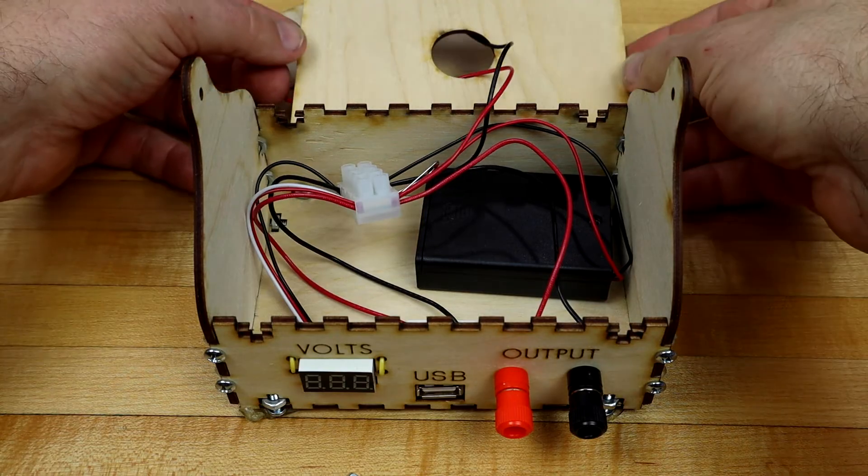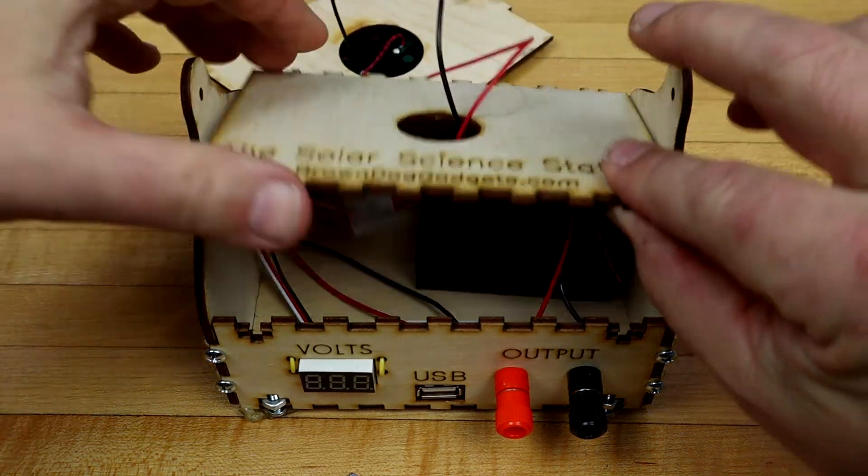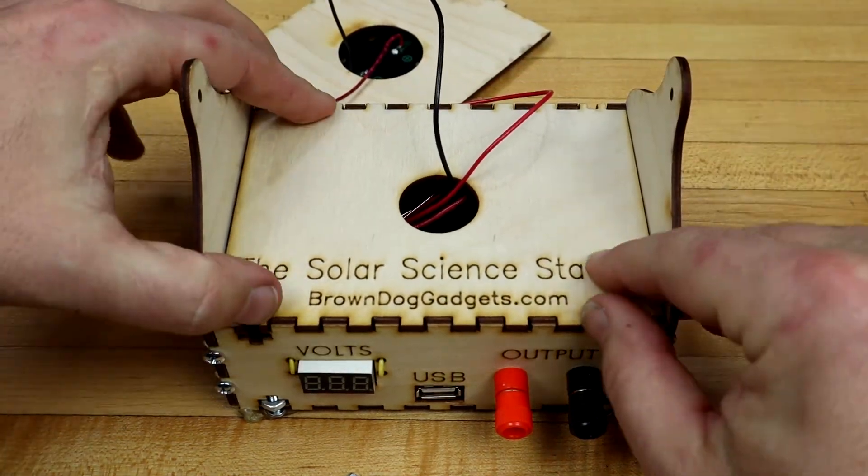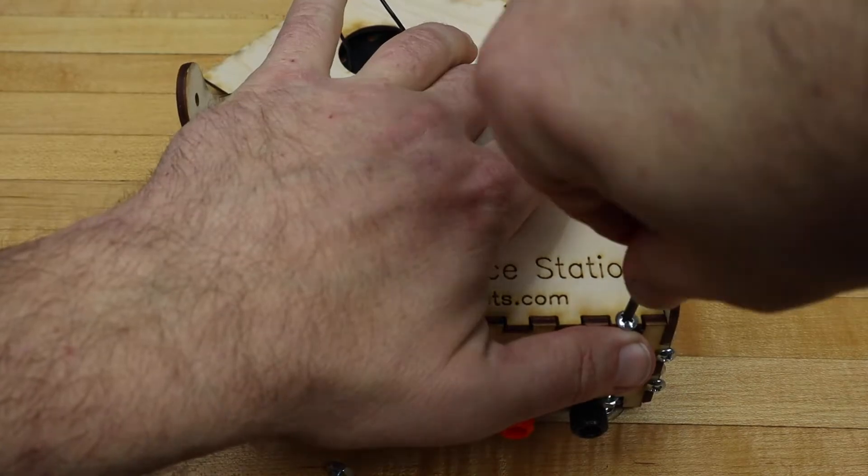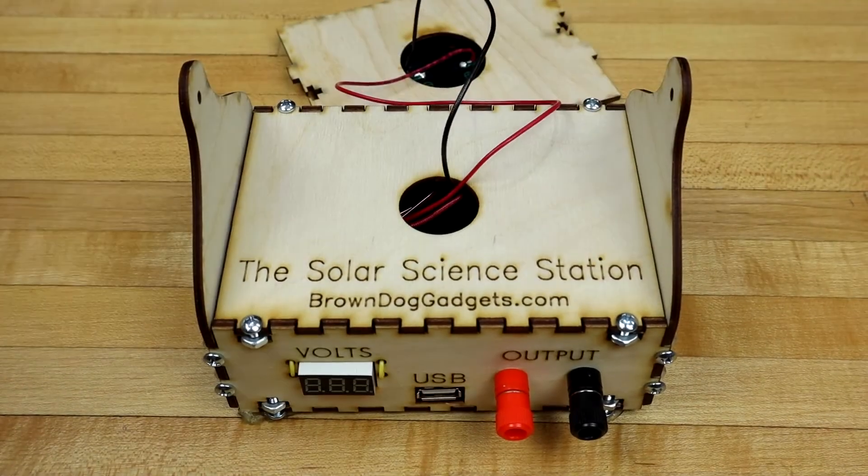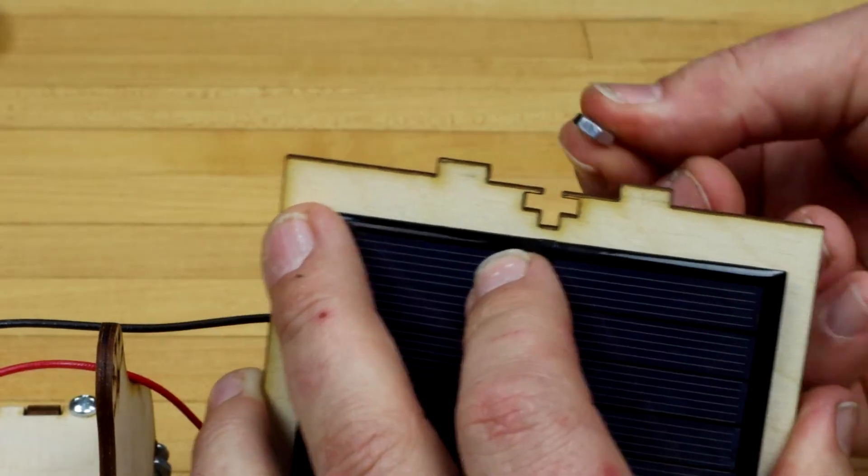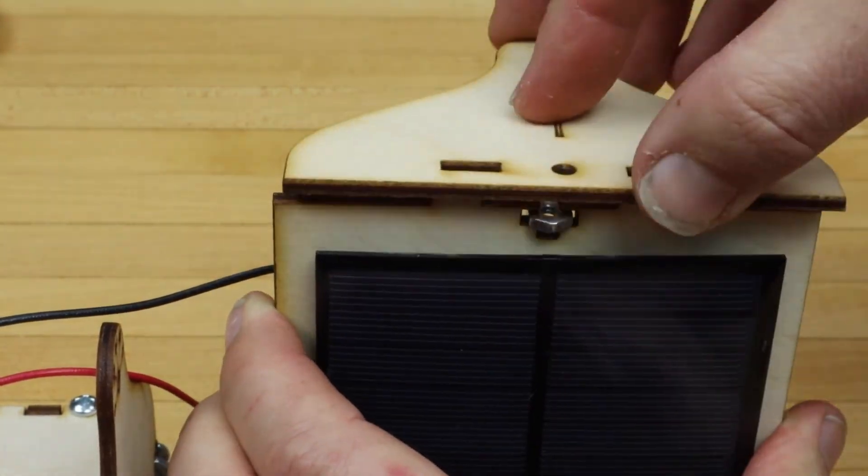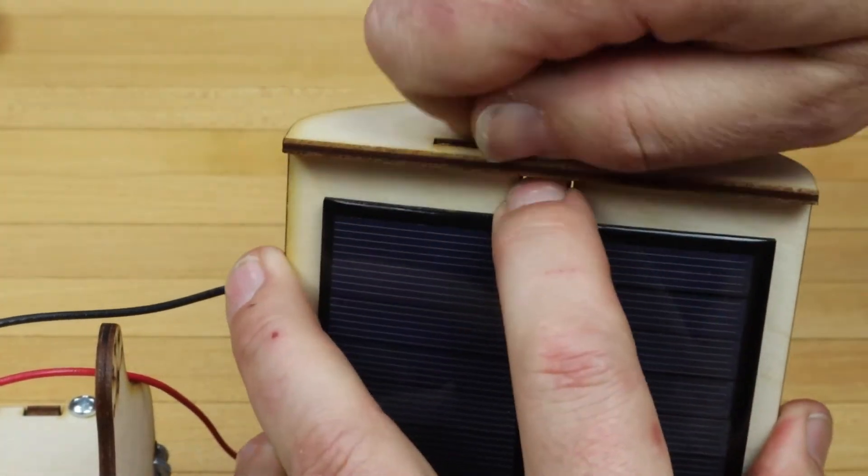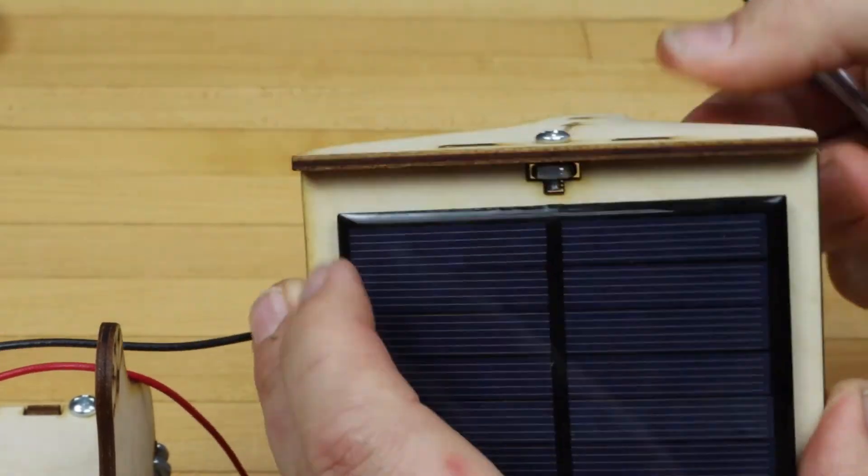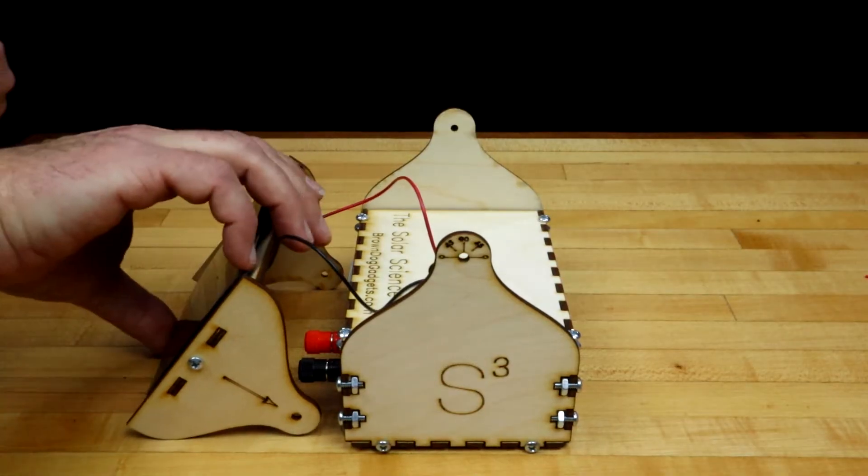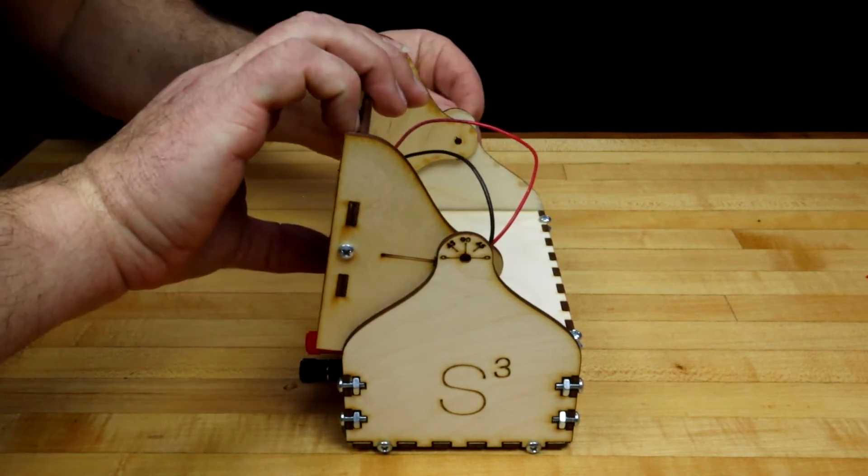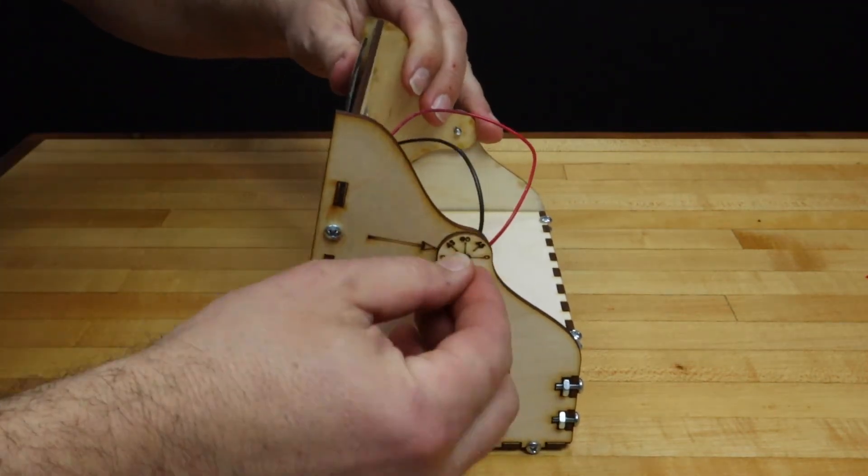Finish assembling the remaining components. Attach the lid to the box with four screws and nuts. Connect the sides to the solar panel mount. Lastly, attach the solar mount assembly to the rest of the Solar Science Station.